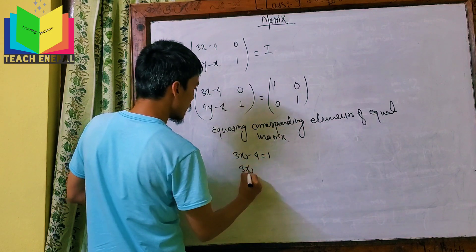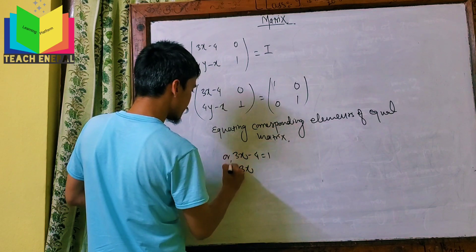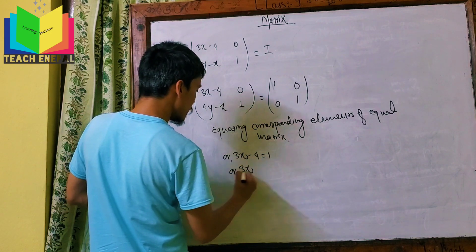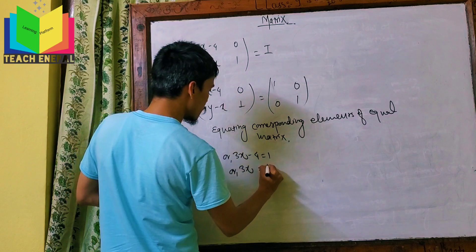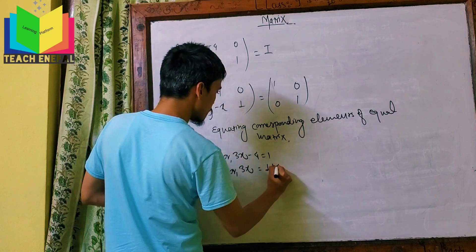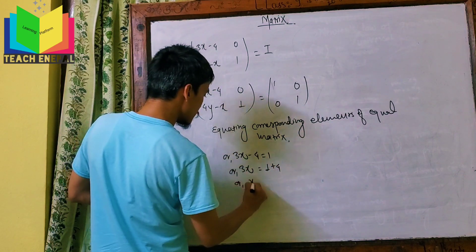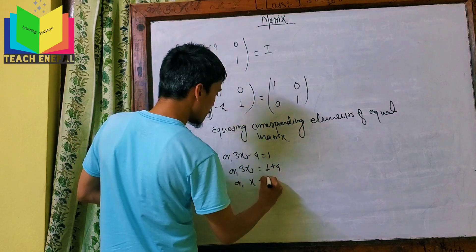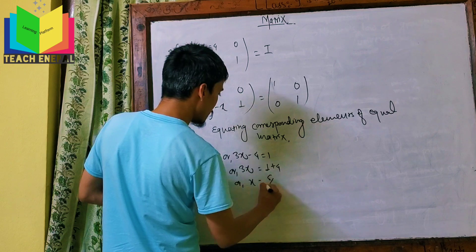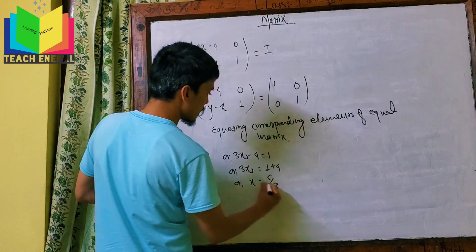We get 3x-4 is equal to 1. That means 3x is equal to 1 plus 4, so x is equal to 5 by 3.